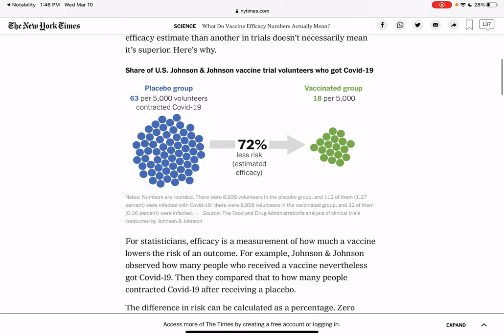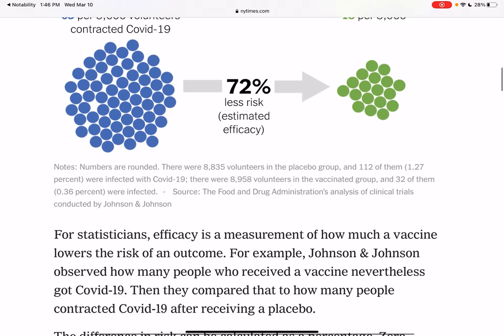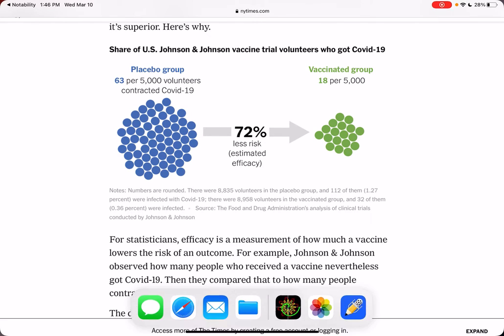It told us that 63 per 5,000 in the placebo group contracted COVID and then 18 per 5,000 in the vaccinated group. So it's per 5,000. If you look really closely at this note at the bottom, it says the numbers are rounded so it was actually out of more. They just found the average per 5,000 because visually we can see it a little bit better.